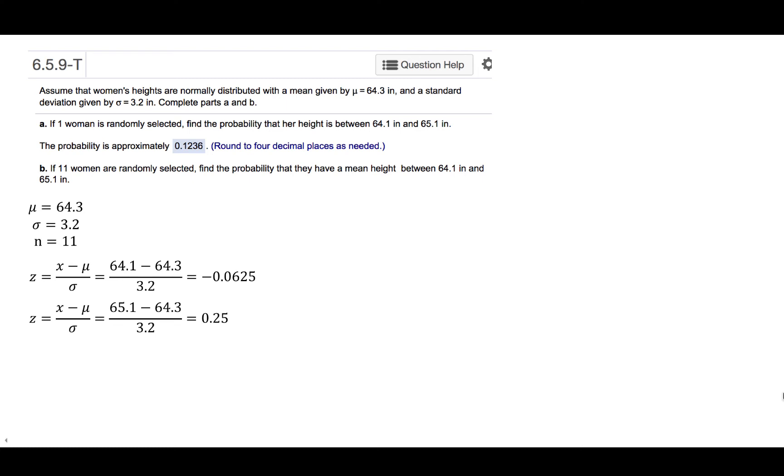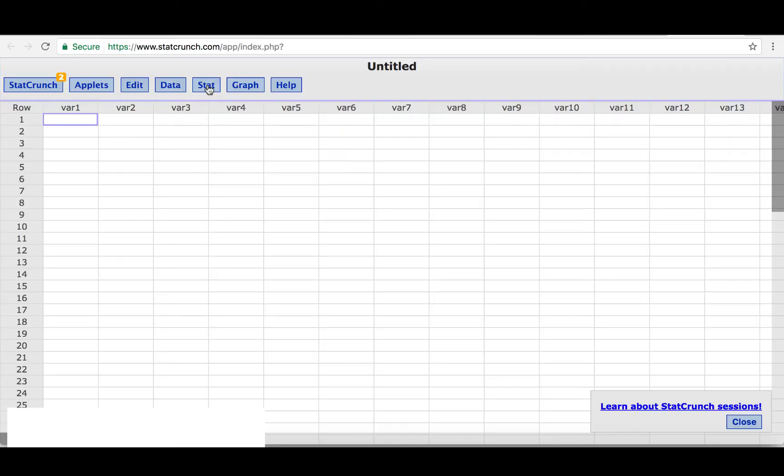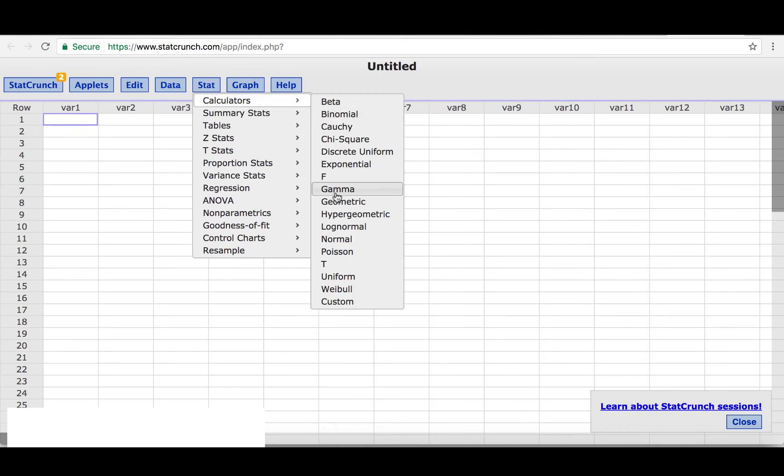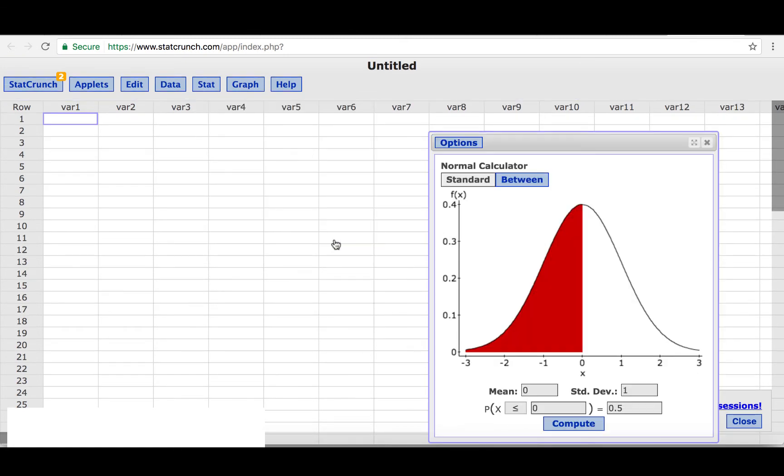We can solve this problem using StatCrunch, so we'll click Question Help and then StatCrunch. Once we're in StatCrunch, we'll click Stats, Calculators, Normal. We want to find an area between a couple of given values, so we'll click Between.